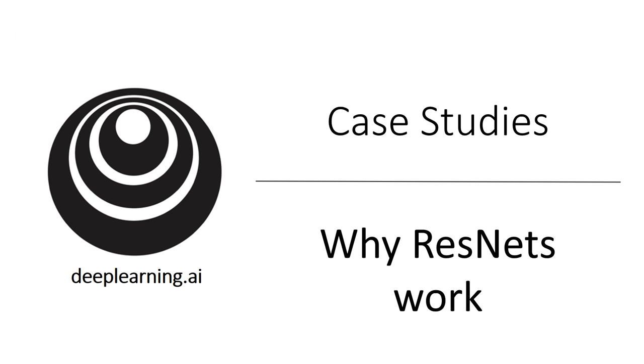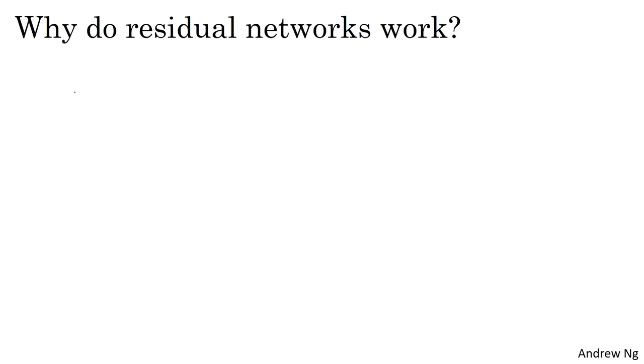Let's look at an example. What we saw in the last video was that if you make a network deeper, it can hurt your ability to train the network to do well on the training set. And that's why sometimes you don't want a network that is too deep. But this is not true or at least it's much less true when you're training a ResNet. So let's go through an example.